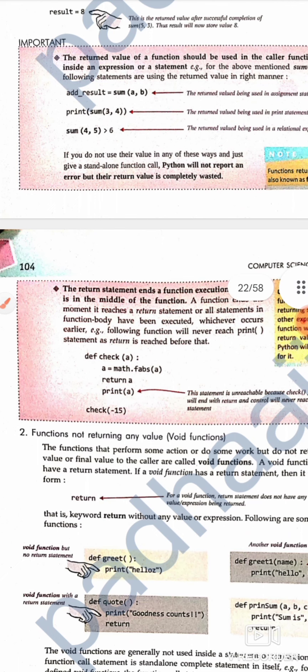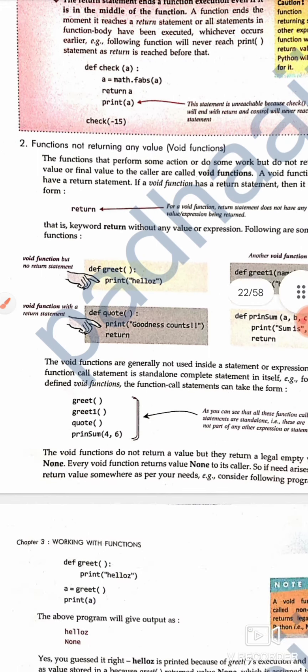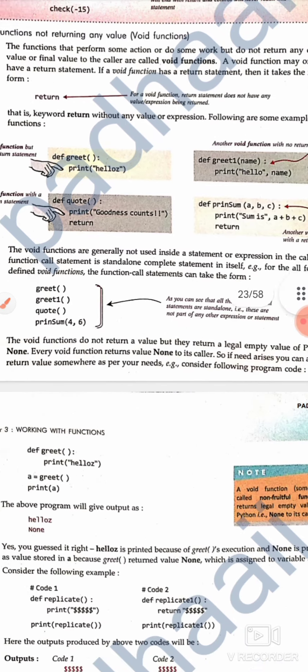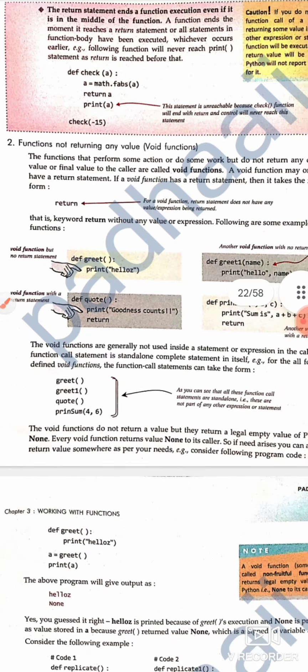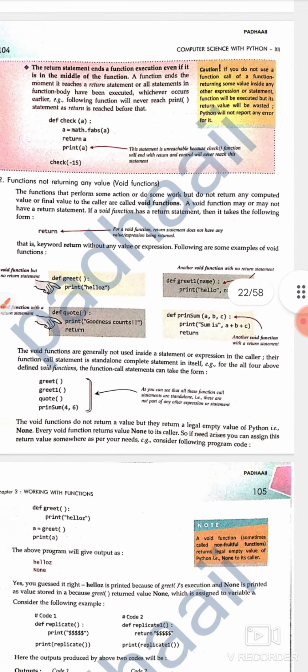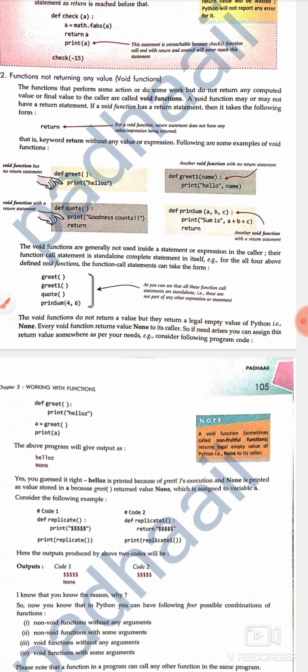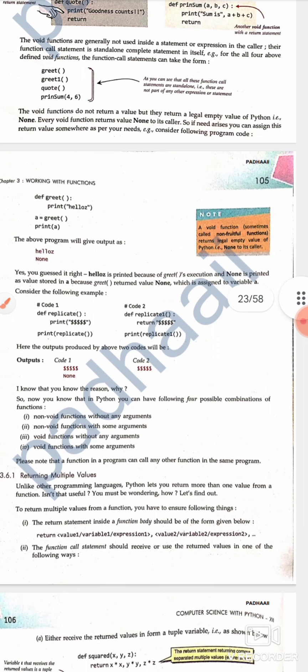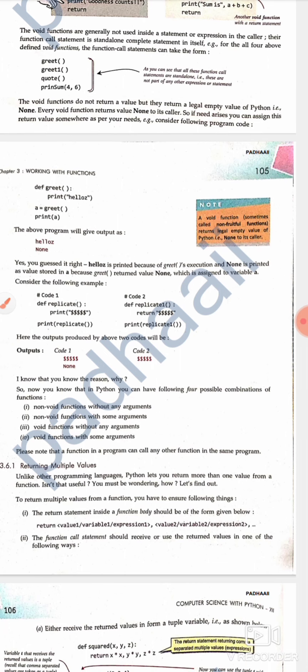Functions not returning any value are known as void functions. They do not have any return value which I can write down anywhere. The keyword return without any value or expression following are examples of void functions. If I have greet() that prints hello, then try to take the return value into a variable and print it, it will give me None.